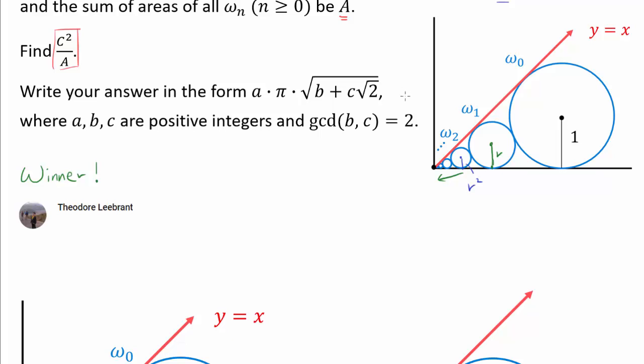I will give you the answer now. I am talking about the line from the origin to the center of ω₀. Why not?